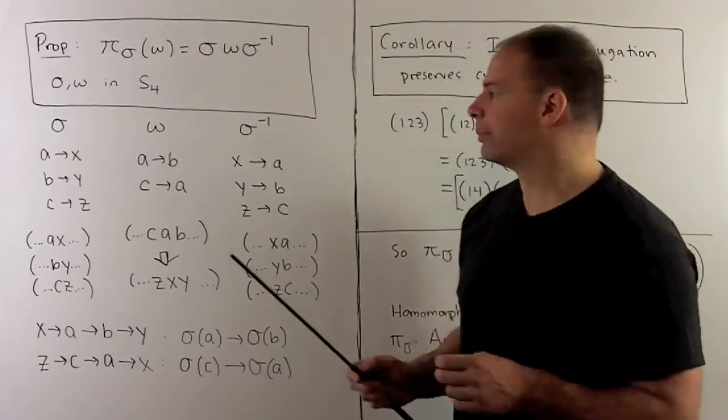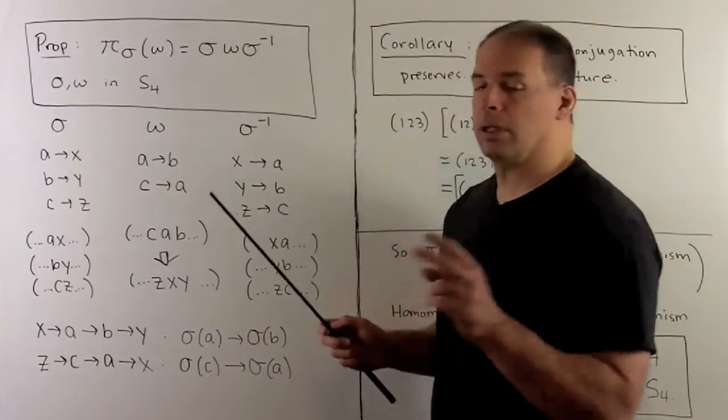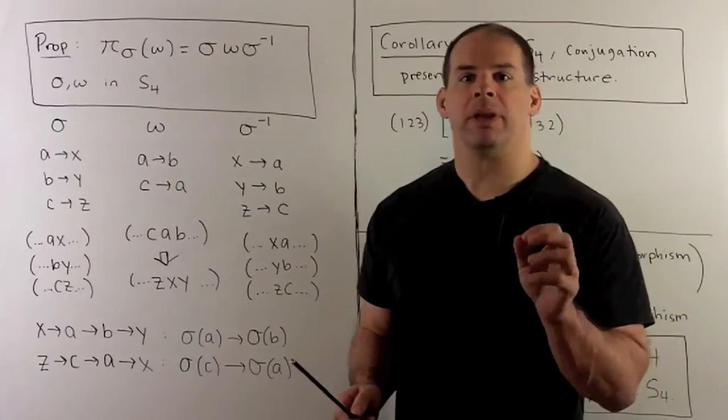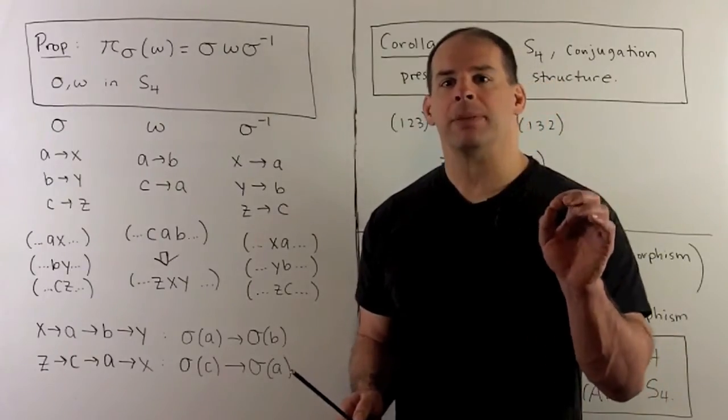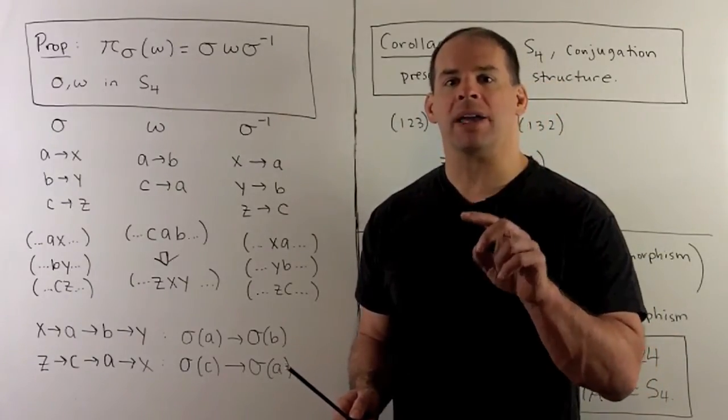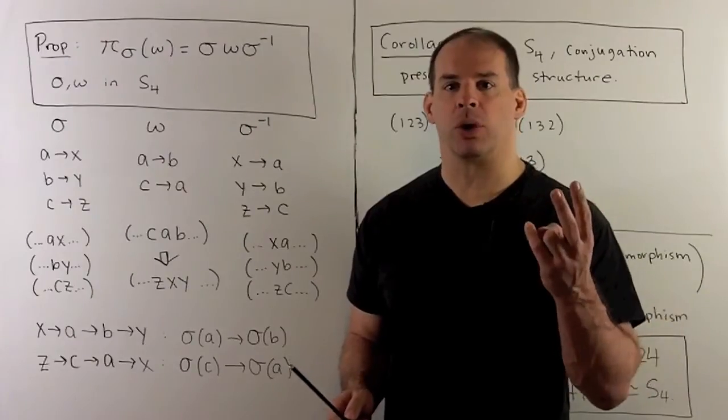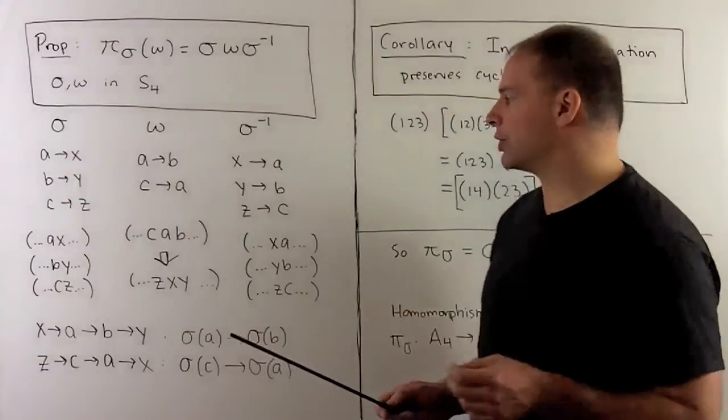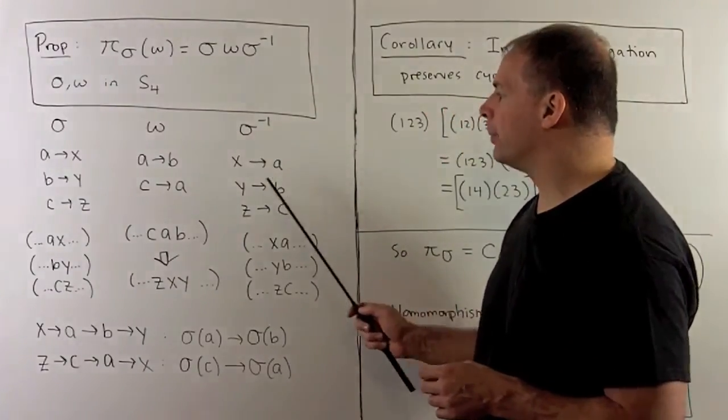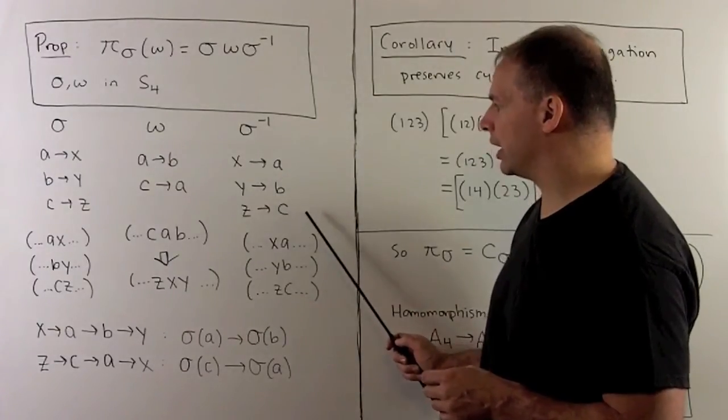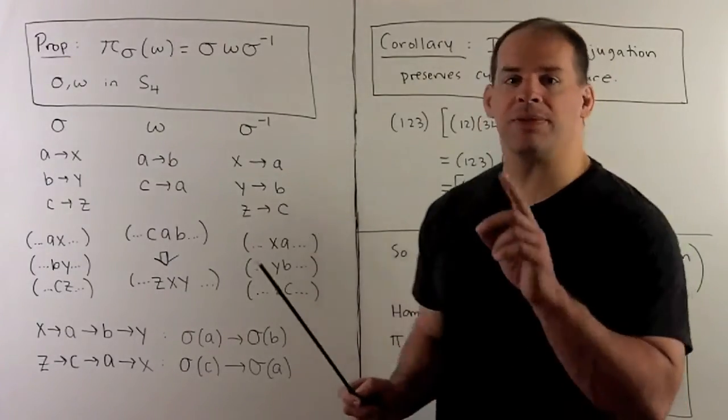That means for σ inverse, okay for an inverse function, if F(X) = Y then F inverse of Y equals X, so we just reverse the order. For σ inverse we have X goes to A, Y goes to B, Z goes to C. Now we just follow things out.